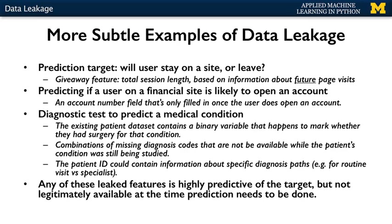Let's look at some more subtle examples of data leakage problems. One classic case happens when information about the future that would not legitimately be available in actual use is included in the training data. Suppose you're developing a retail website and building a classifier to predict whether the user is likely to stay and view another page or leave the site. An example of a feature that contains leaked information would be the user's total session length, or the total number of pages they viewed during their visit. This total is often added as a new column during a post-processing phase of the visit log data — this feature has information about the future, namely how many more visits the user is going to make, which is impossible to know in actual deployment. A solution is to replace the total session length feature with a page visit in session feature that only knows the total pages visited so far in the session, and not how many are remaining.